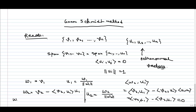For u3, we take v3 and subtract v3·u1 times u1, minus v3·u2 times u2, and so on. So for each step we do this same process — we use the vectors we have already obtained to calculate the new vector. Our u3 will then be w3 divided by the norm of w3. This is the procedure.